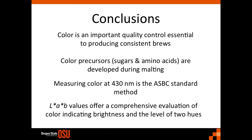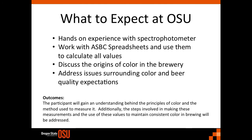To wrap up this module, let's talk about some of the high points. First and foremost, color is an important measurement that is essential to producing consistent brews that meet your consumer's expectation. Color precursors are formed during the malting process — more on this in the additional reading section. It is the standard method to make the color measurement at 430 nanometers by ASBC standard method Beer 10. LAB tri-stimulus values offer a comprehensive evaluation of color that can be used for precise calculations and blending in an offline setting. When you come to Oregon State, you will get hands-on experience with a spectrophotometer and work with the ASBC spreadsheet to calculate color values, and we can also discuss the origins of color in the brewery as well as issues surrounding beer quality and color expectations by consumers.